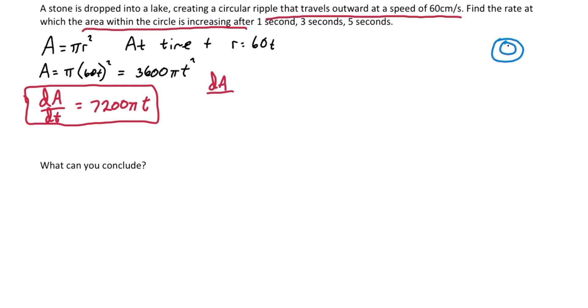dA dt at 1 second, plugging into our derivative there, we get 7,200 pi centimeters squared per second.